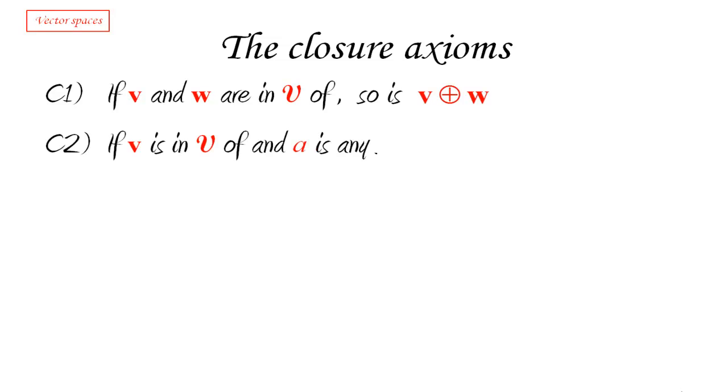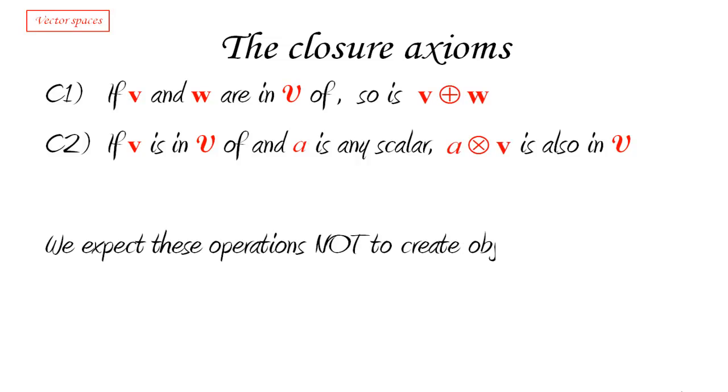The second one is similar to it. If I pick a vector in my set and I pick a scalar, then once I put them together, the product, the scalar product also has to be in my vector space. So what we're saying with these two axioms is that we expect these operations to never create an object which is outside of V.